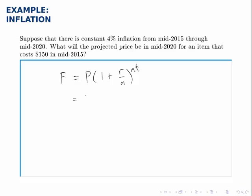So replacing P with $150, replacing R with 4%, and again replacing N with 1, because this inflation process only happens once a year, according to our assumptions. Projecting out 5 years, we can calculate that at the end of the 5 years, this will cost whatever that right side equals.